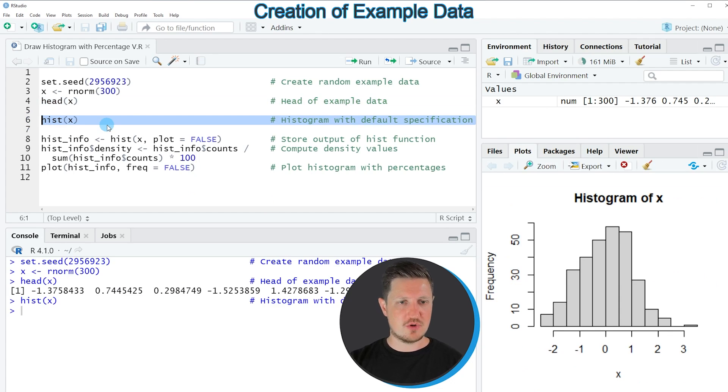So if you run this line of code you can see at the bottom right of RStudio that a new histogram has been created. However you can also see that the bars of this histogram are shown by their frequencies as you can see based on the y-axis.